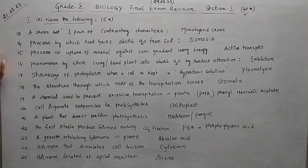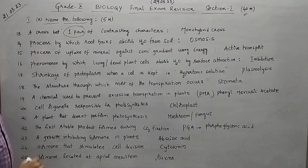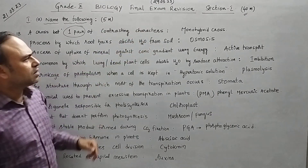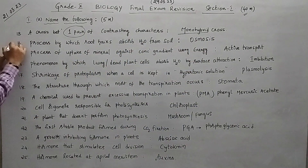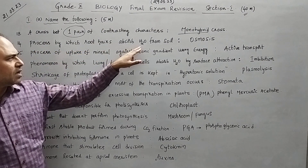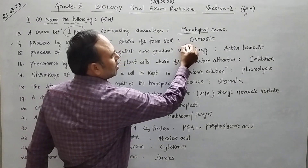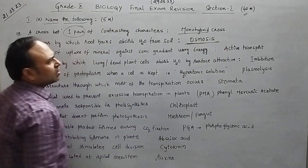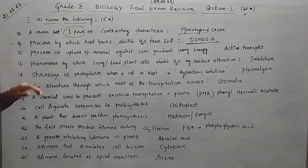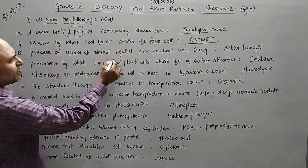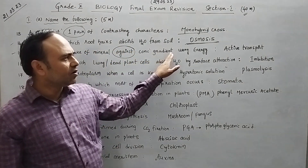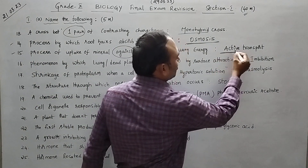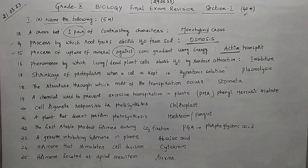From question 13 to 25: Question 13 — a cross between only one pair of contrasting characters is called a monohybrid cross. Question 14 — the process by which root hairs absorb water from soil is osmosis. Question 15 — the process of uptake of minerals against the concentration gradient using energy is active transport.